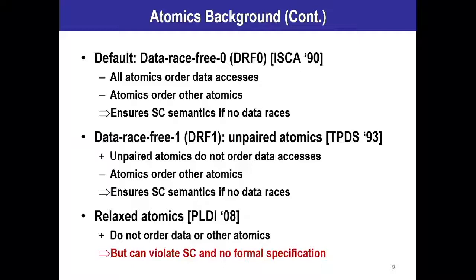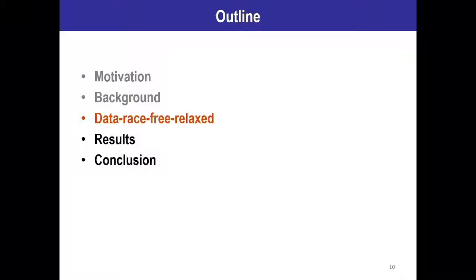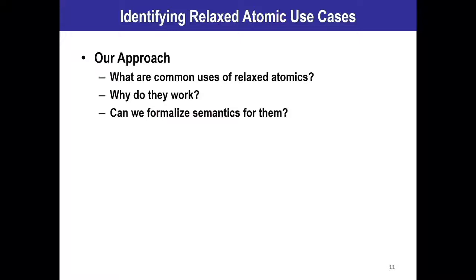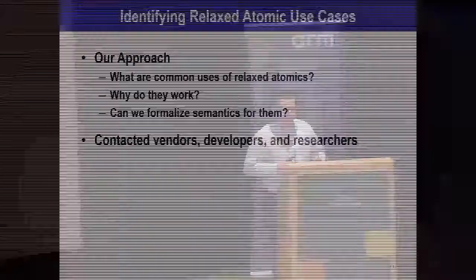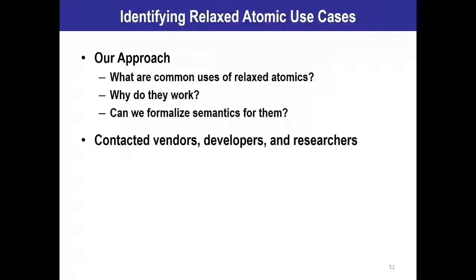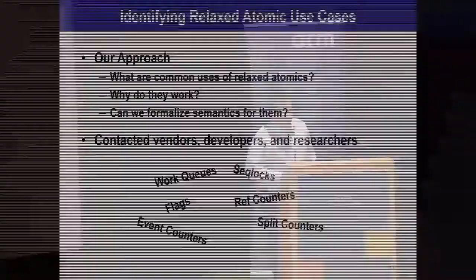Now that I've given some background about relaxed atomics and memory consistency models, let's look at how people are actually using relaxed atomics in practice. Our approach had three steps: first, look at how people are actually using relaxed atomics; then understand why they work and why it's safe to use relaxed atomics in them; and finally come up with a way to formalize semantics. To identify how they were actually being used, we conducted a wide survey in industry — various vendors, developers, and researchers — as well as conducting a thorough sweep of benchmark suites that existed in the space. Some of you in the audience are among the people we talked to. We distilled the use cases down to work queues, event counters, flags, seq locks, ref counters, and split counters.